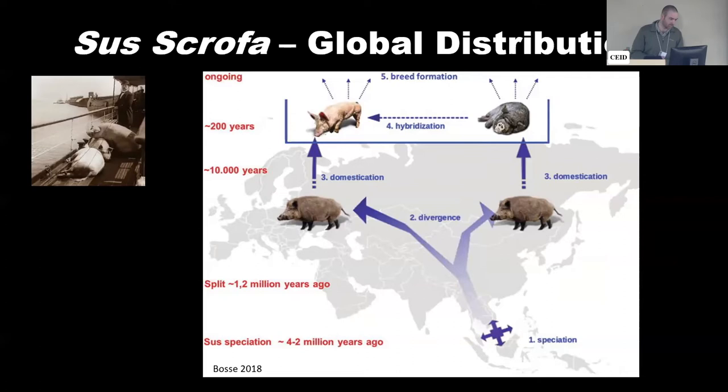Speciation of Sus scrofa began two to four million years ago, and since then there's been a lot of divergence into different breeds and things like that. I kind of likened it to the domestic dog — different breeds and things like that. But it's all under what we consider Sus scrofa: the wild pig, Eurasian wild boar, and domestic swine are all the same species.